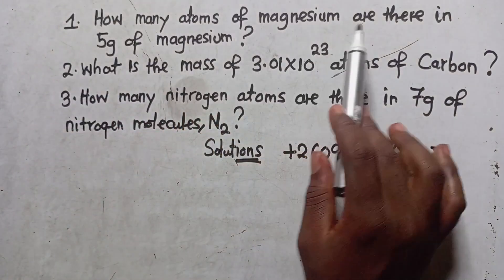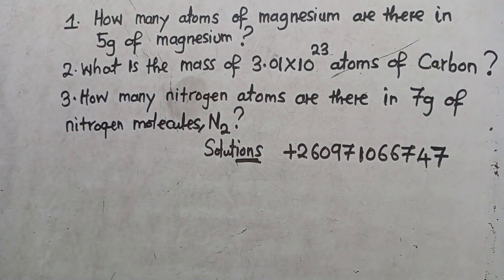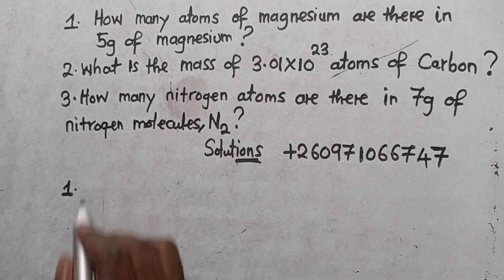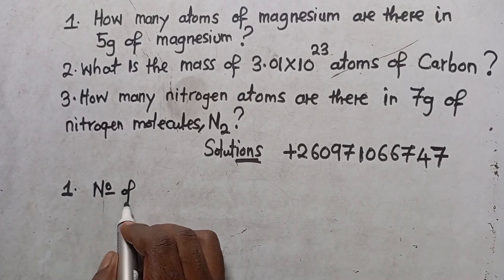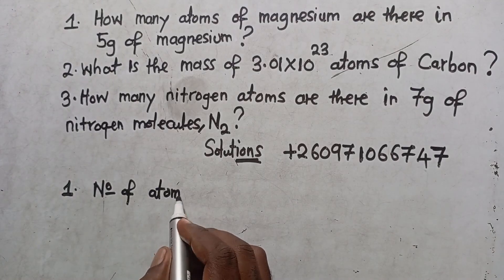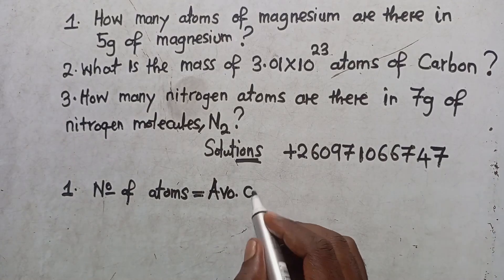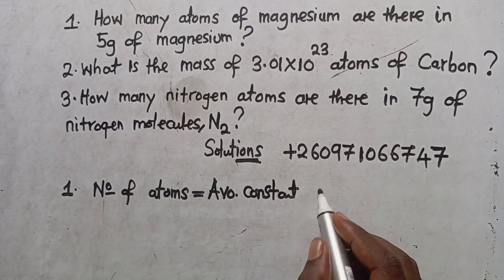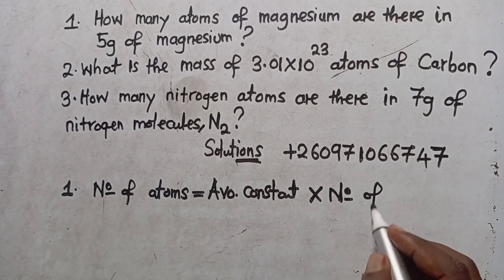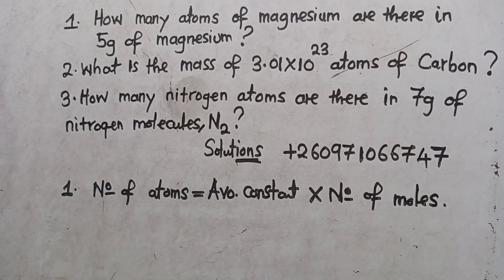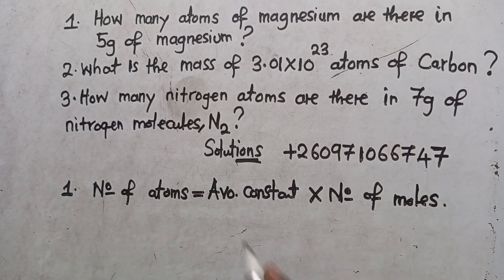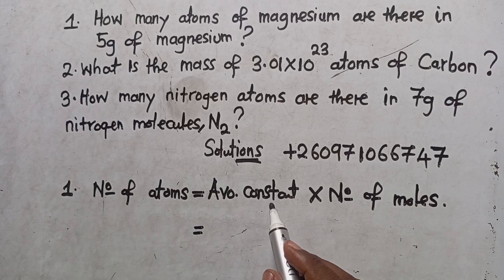How many atoms of magnesium are there in 5 grams of magnesium? I told you that if you want to calculate the number of atoms, the formula you are supposed to use — you need to know that the number of atoms. There are two formulas. We are going to go with this one where you say Avogadro's number, also called the constant, then you multiply it with the number of moles. So if you are told to calculate the number of ions, number of molecules, number of particles, or number of atoms, this is the particular formula we get to use.